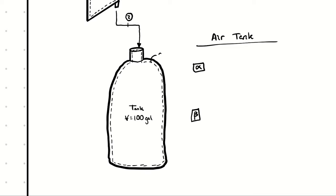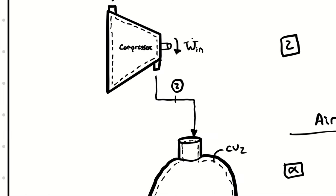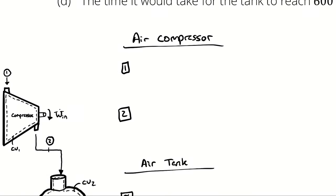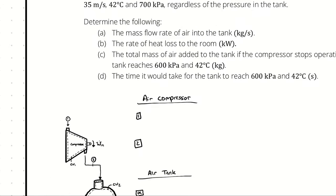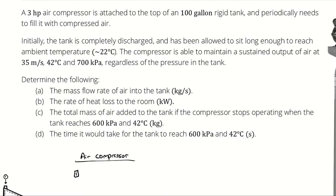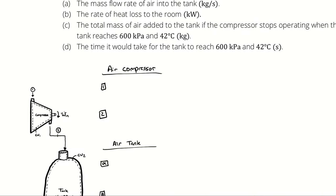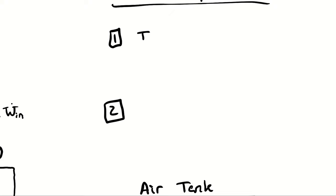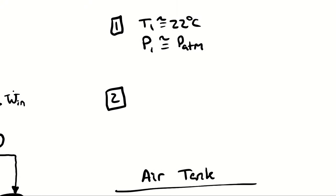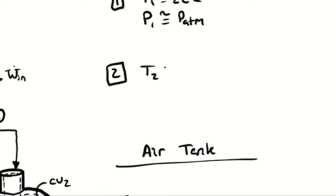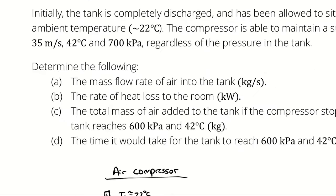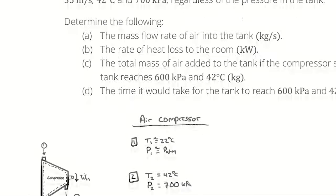The tank analysis, which I'll call control volume 2, is going to be an open transient analysis. The compressor analysis is open and steady. I can now propagate information about my state points. At state 1, I know the inlet conditions are ambient: 22 degrees Celsius and atmospheric pressure. At state 2, the outlet is 42 degrees Celsius and 700 kilopascals.